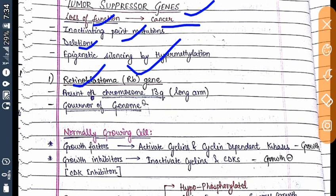The first gene we are going to discuss is the retinoblastoma gene. It is present on chromosome number 13, on the long arm. This gene is known as the 'governor of the genome.'